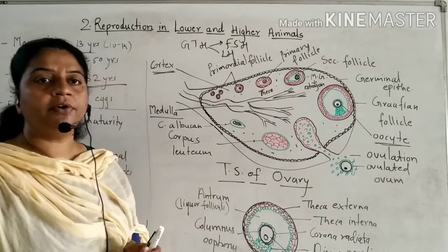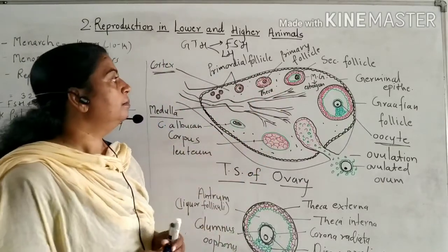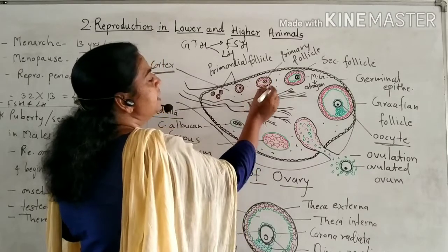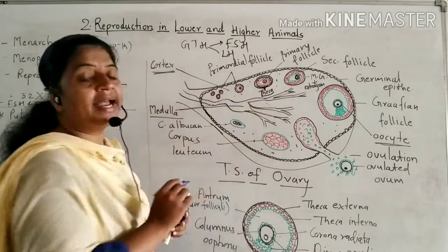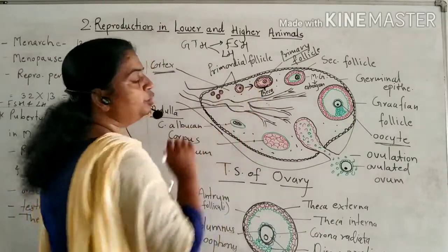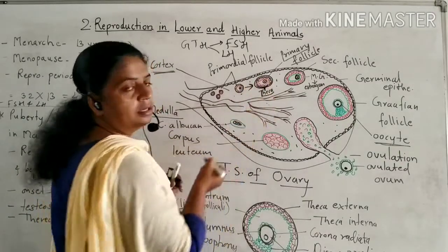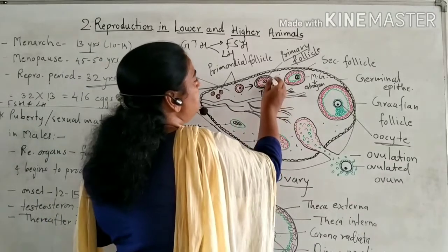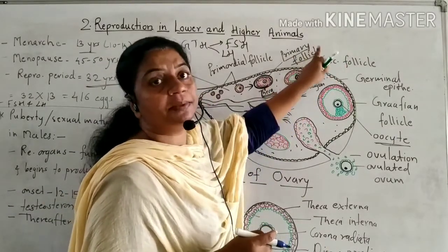Two to six primordial follicles develop into primary follicles. In the primary follicle, the cuboidal follicular cells increase in number, and stroma cells are added externally to the follicle, forming a fibrous covering outside called the theca. This converts the primordial follicle into a primary follicle.